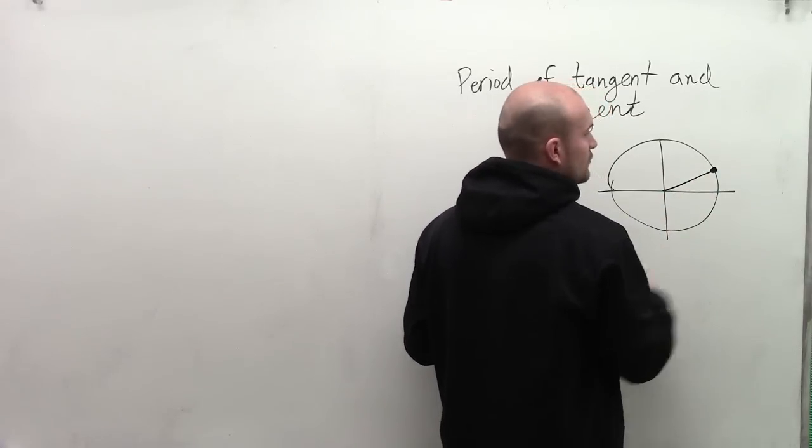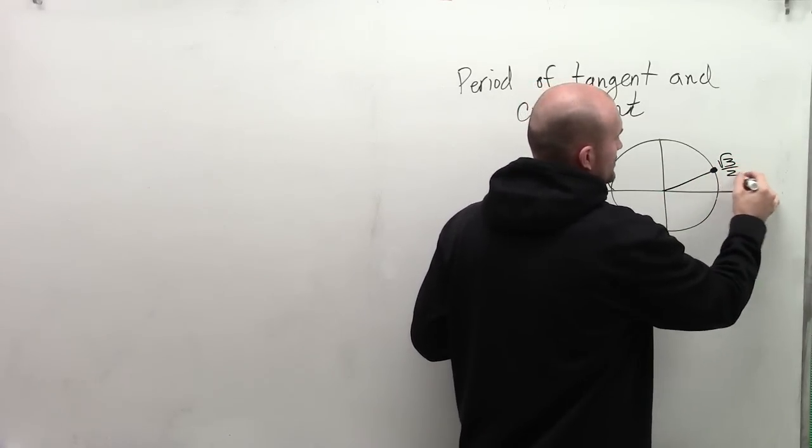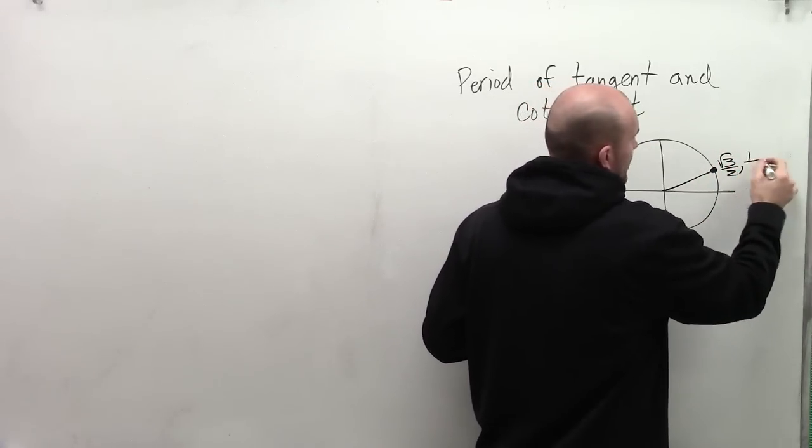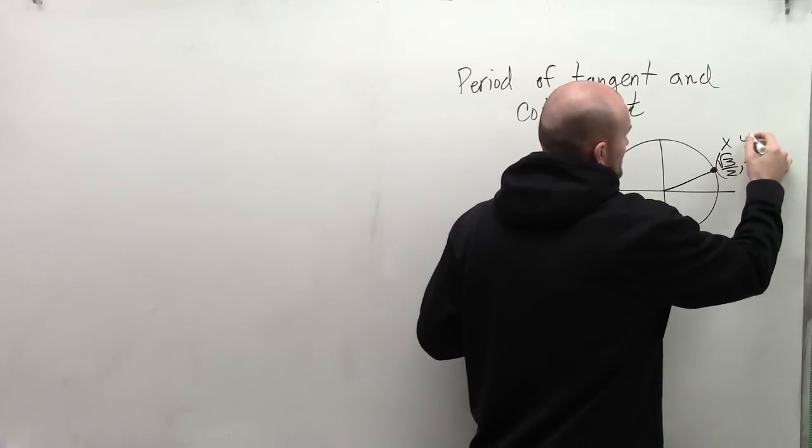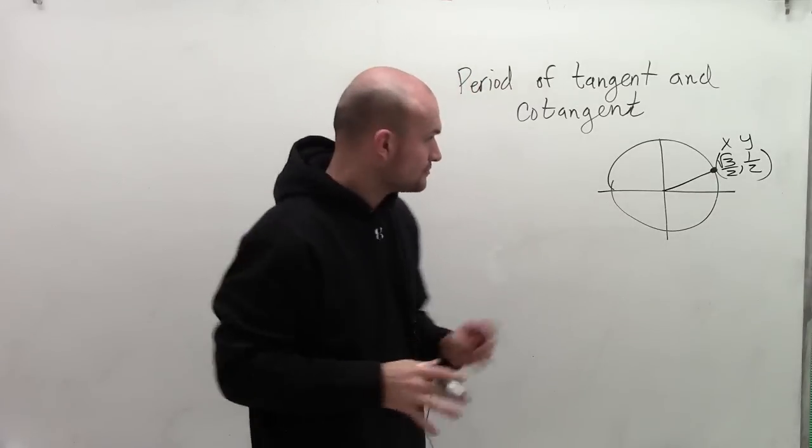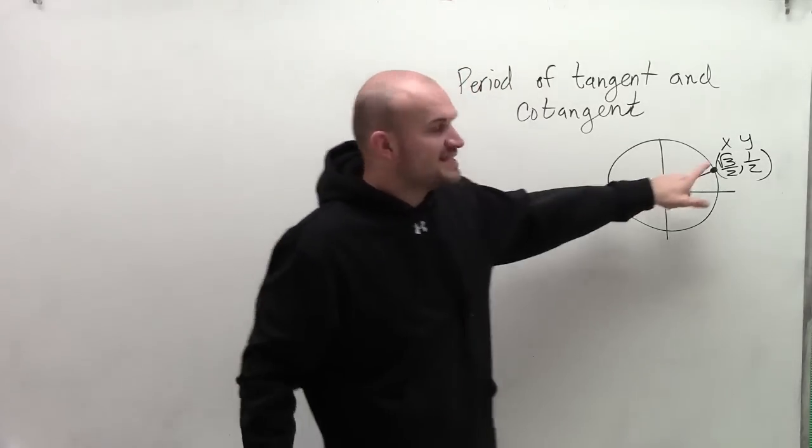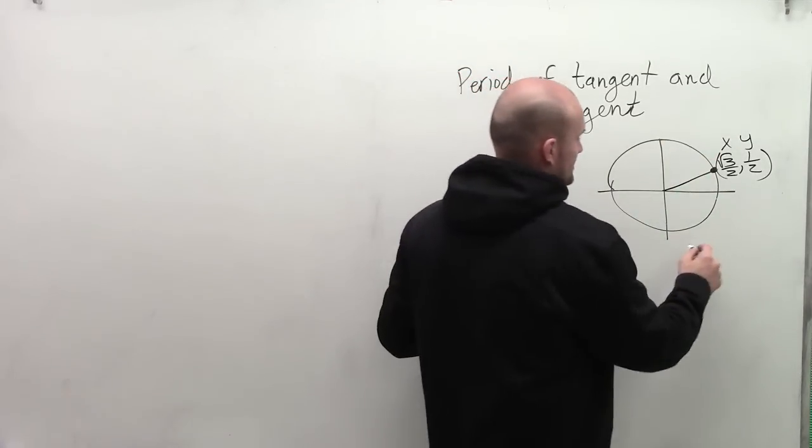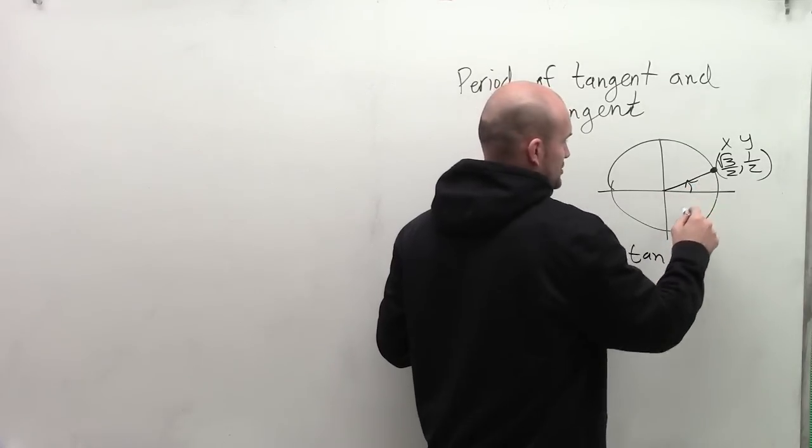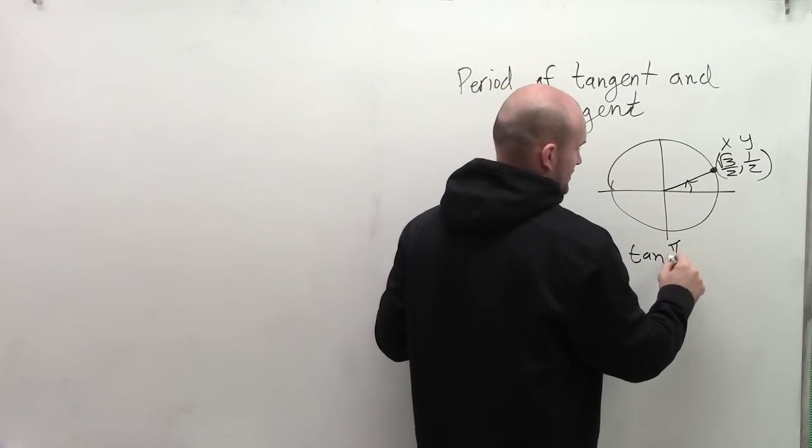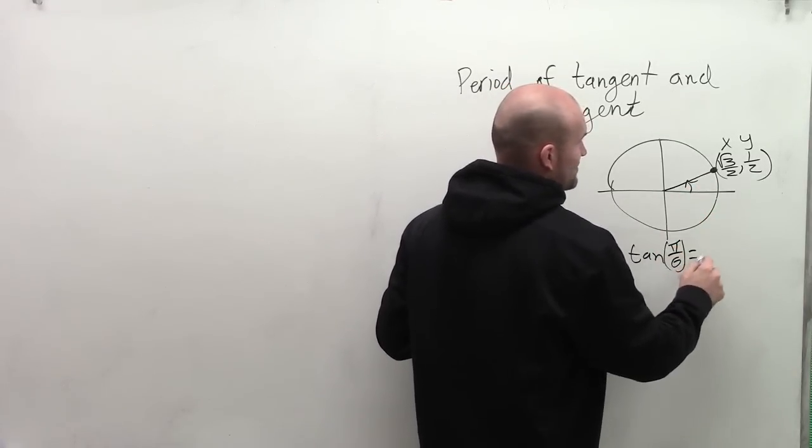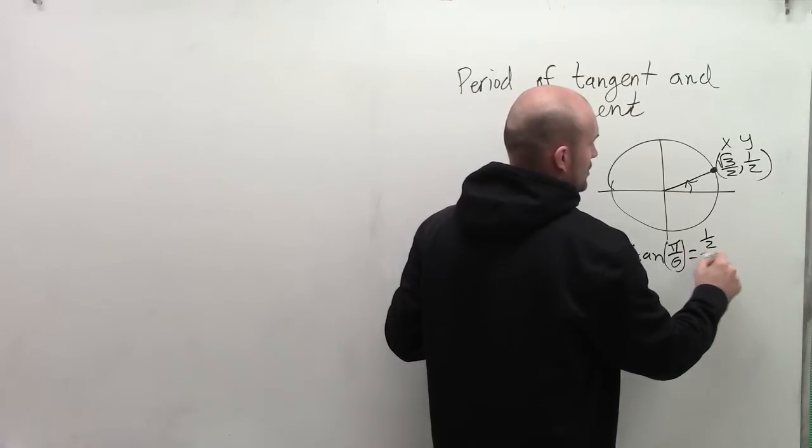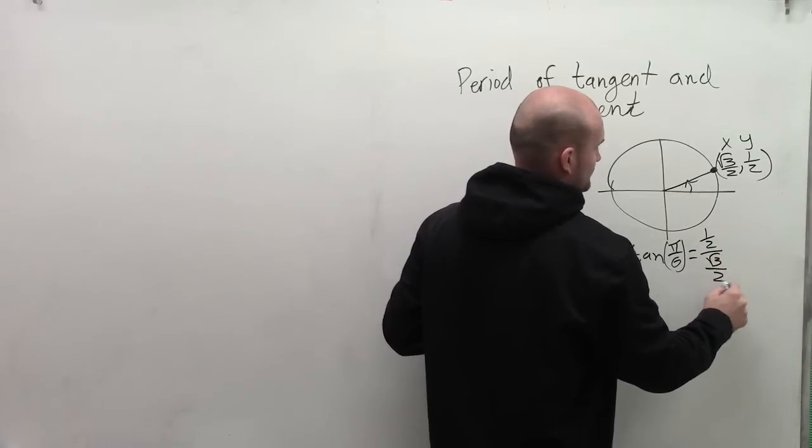If I had this first point in the first quadrant, that is radical 3 over 2 comma 1 half. And that's your x and y coordinate, right? So when we look at the tangent of this problem, the tangent of this angle, which is pi over 6, the tangent of pi over 6 is going to be my y over my x.